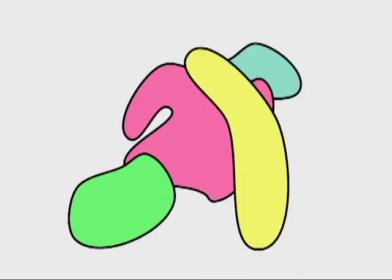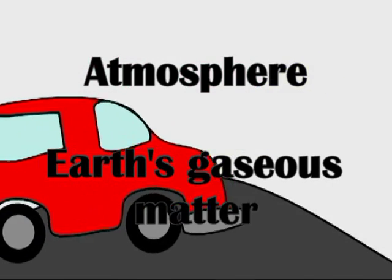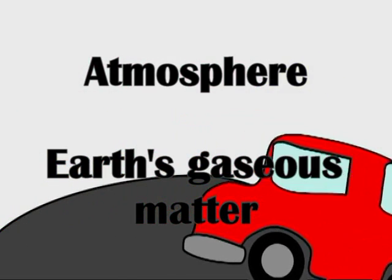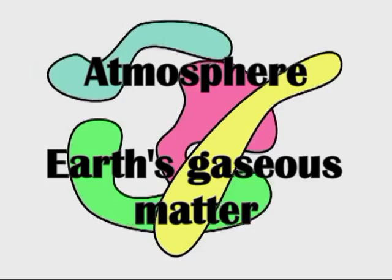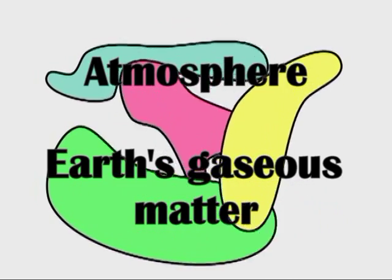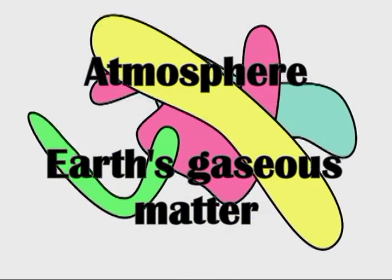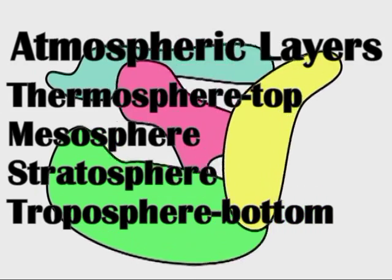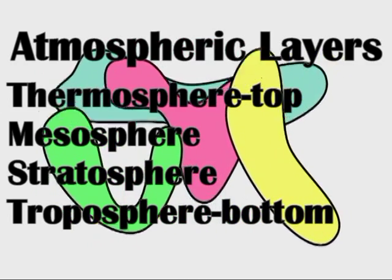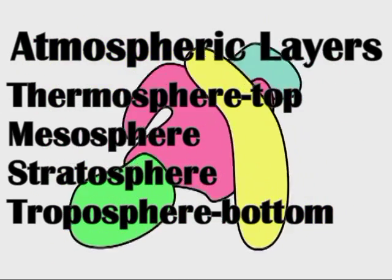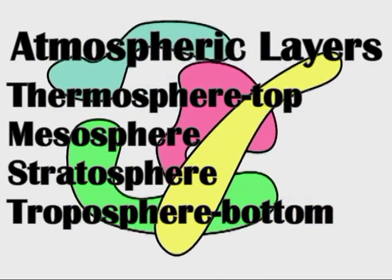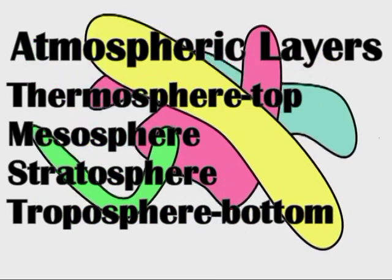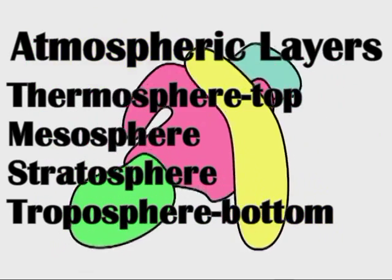Now it's time to move on to the atmosphere. The atmosphere contains all of the gaseous matter of Earth — all the air, carbon dioxide, oxygen, ozone, etc. The different layers, starting from the bottom, are the troposphere, the one that we exist in, the stratosphere, the mesosphere, and the thermosphere, which is the highest.